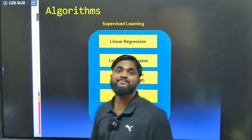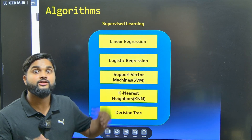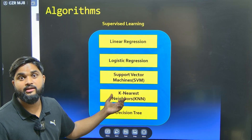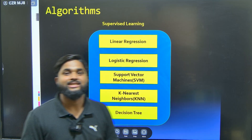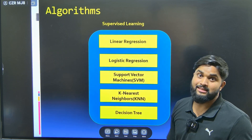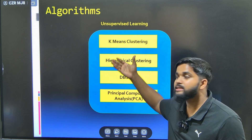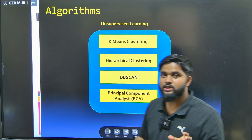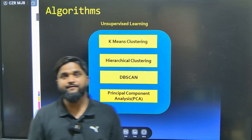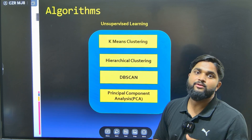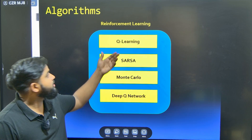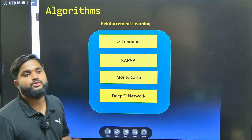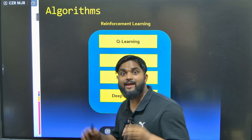Now let's see the algorithms for each type. For supervised learning, we have linear regression, logistic regression, SVM (support vector machines), KNN (K-nearest neighbor), and decision tree. For unsupervised learning, we have K-means clustering, hierarchical clustering, DB scan, and PCA (principal component analysis) — PCA is used to reduce dimensionality, for example from 3D to 2D or 2D to 1D. For reinforcement learning, we have Q-learning, SARSA, Monte Carlo, and deep Q-network.